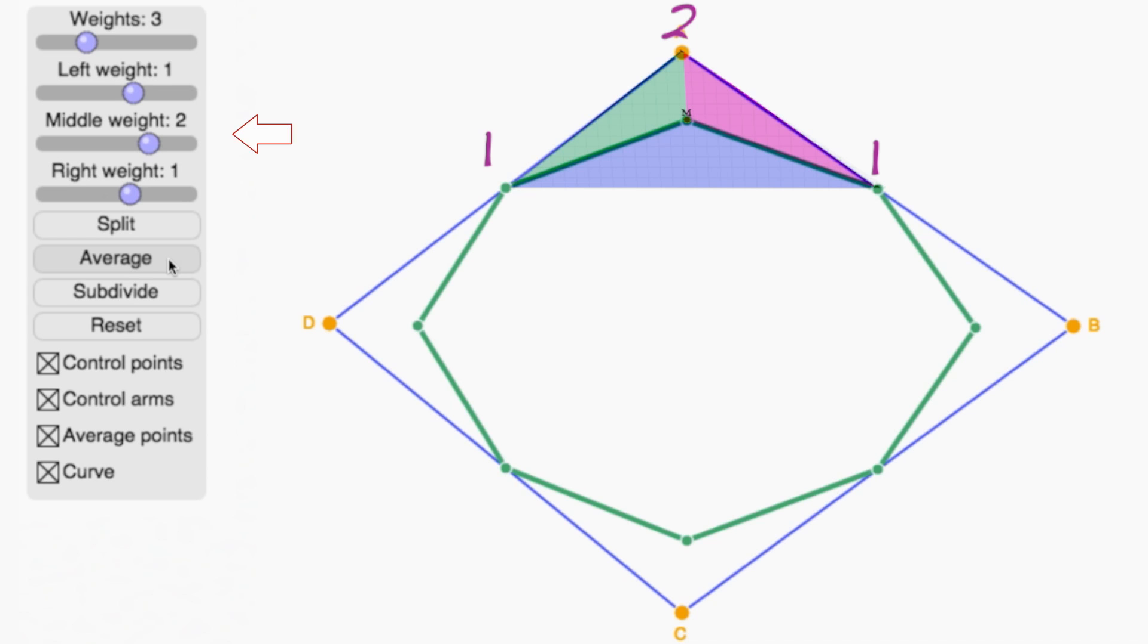And if I pick the weights 1, 2, 1, I get curves that look smoother, just like this.